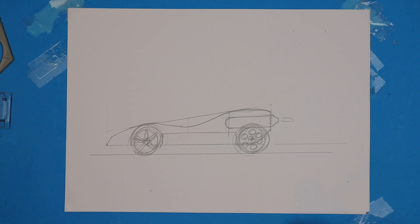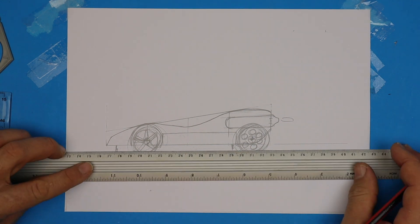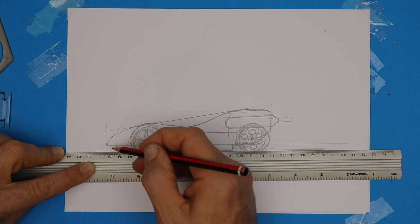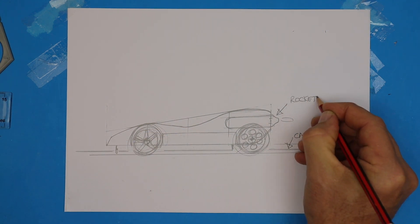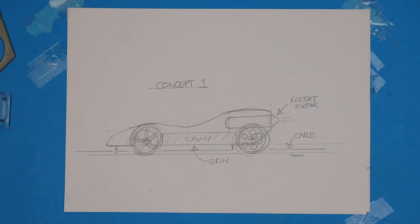Let's firm in the ground line and the little eyelets that guide the car on the cable. It's a good idea with these thumbnail sketches to annotate. That means to use arrows and label the important features.